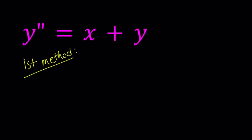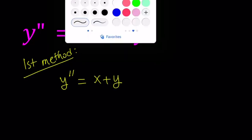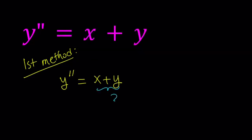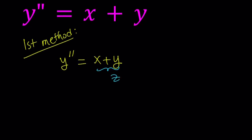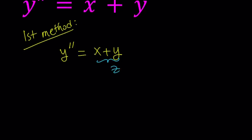For our first method — and we've used this method before — I'm going to use substitution. Since we have x plus y on the right-hand side, I would like to replace x plus y with z. So now I have x plus y equals z.